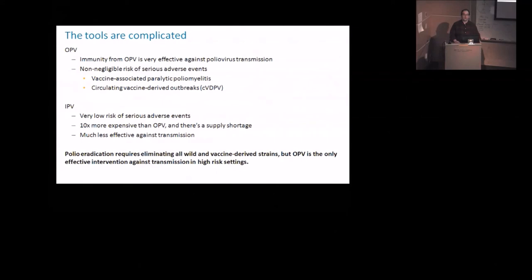IPV protects you from paralysis really nicely, but it does not protect somebody else from you silently having a large infection and excreting a bunch of virus and giving it to somebody else. And so when you don't have universal vaccination, you don't get good herd immunity from IPV in most settings. And so when we talk about polio eradication, we're talking about all poliovirus eradication, which includes OPV, but OPV is the tool that we actually have to eradicate poliovirus. And so it's complicated.